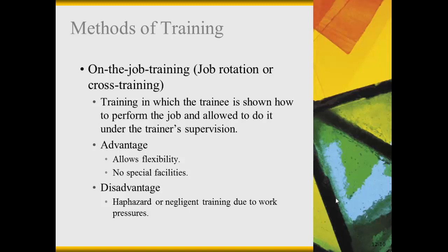Let's talk about methods of on-the-job training. There's on-the-job training and job rotation or cross-training, where the employee actually does the job, is shown how to do it, and is monitored the first few times while the supervisor is right there until they've mastered the process. It's great because it allows flexibility and doesn't require special facilities — you can train the employee right at their workstation. The disadvantage is that it can be sloppy; the employee may not get all the information they need, and training may be interrupted due to work pressures.